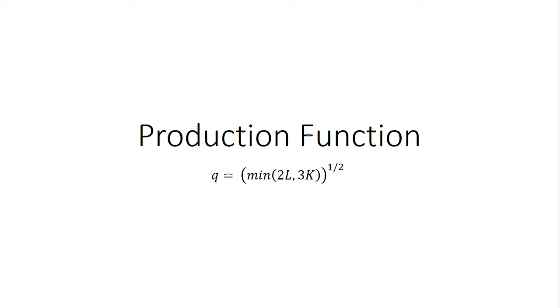Hello. In this video, we're going to look at this production function of the following form, where output is going to be the square root of the minimum of what's in here, 2L or 3K.